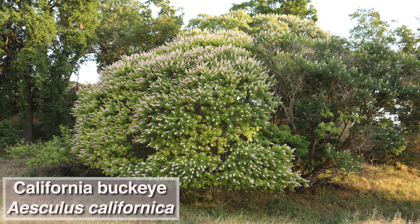Aesculus californica is relatively easy to identify and can't be easily confused with any other native species in California. Some of its morphological features are fairly unusual — it's fun to look at them up close. One important note: all parts of the California buckeye are poisonous and should not be eaten.